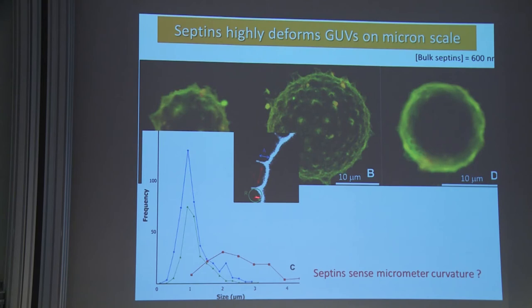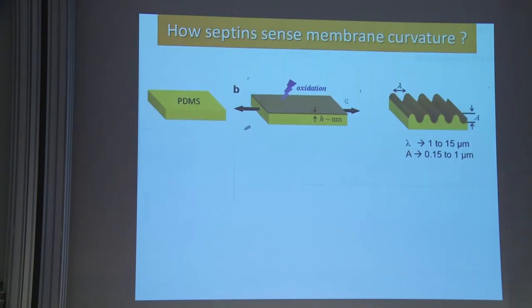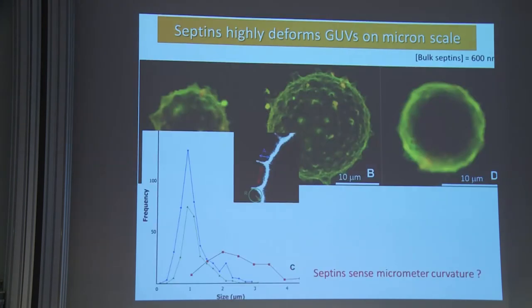Looking at the curvature imposed and the length of the spikes, it seems that septins are imposing spikes of around one micrometer radius of curvature. It seems then that septins are able to sense curvature in the micrometer range.